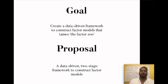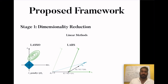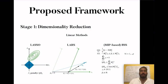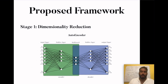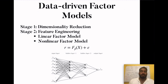In the first stage, we do dimensionality reduction, comparing linear methods such as auto-shrinkage, LASSO, LARS (least angle regression selector), and a mixed-integer-based best subset selection model based on the work of Bertsimas and collaborators from 2016. We compare those to a nonlinear dimensionality reduction method called autoencoder — a neural-based architecture allowing nonlinear dimensionality reduction via a bottleneck layer of new latent factors. In the second stage for feature engineering, we compare linear models and nonlinear models represented by feedforward neural networks.